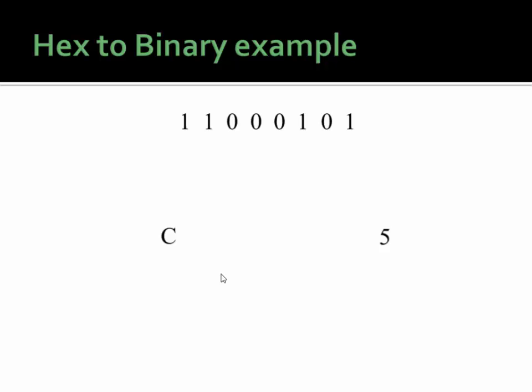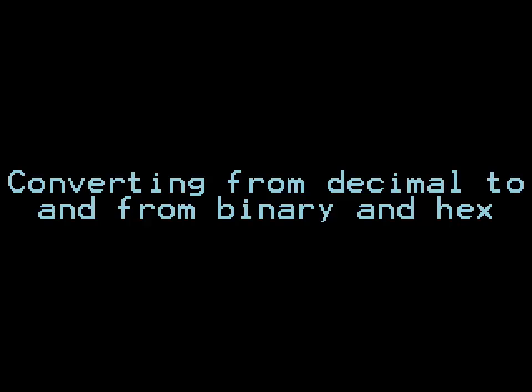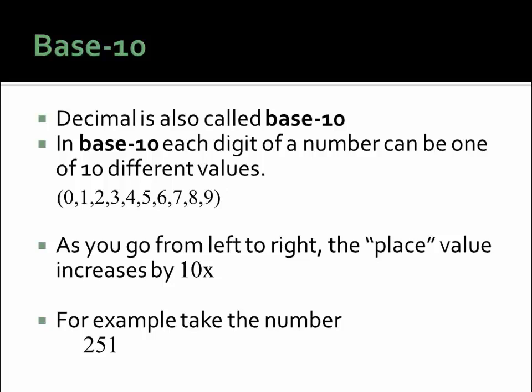Ultimately, we need to understand how to convert from binary and hex to the number system we use — decimal — and from decimal back to binary and hex. Humans use decimal, which is called base ten. It's called base ten because there are ten different digits, and as you create a number and write digits down, as you go from right to left, the place value of each digit increases by ten times.